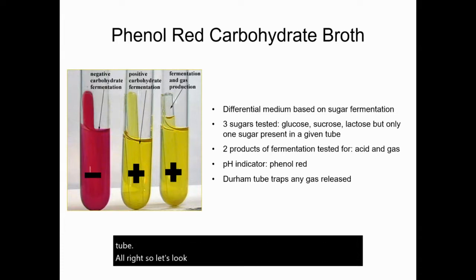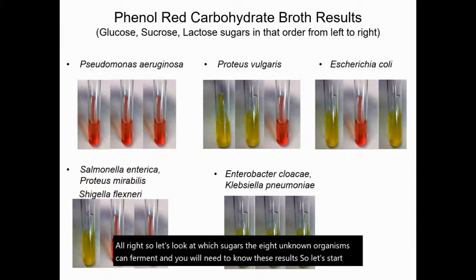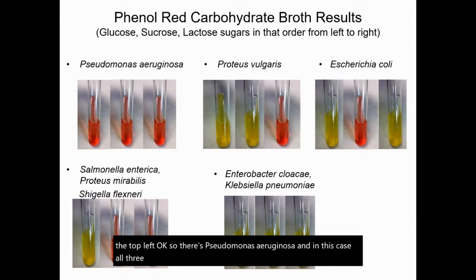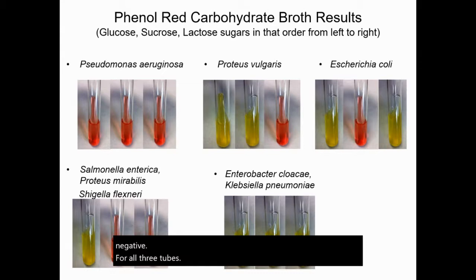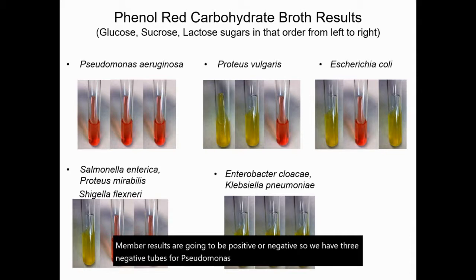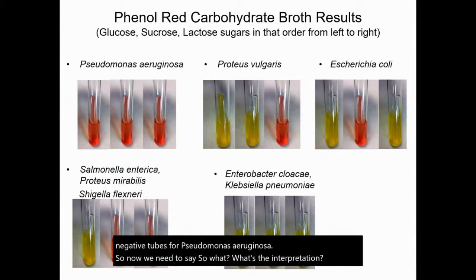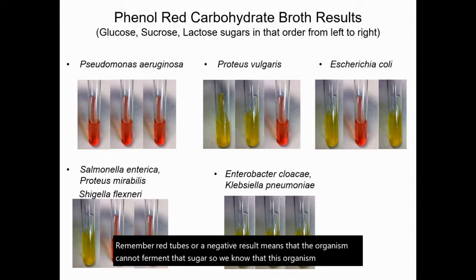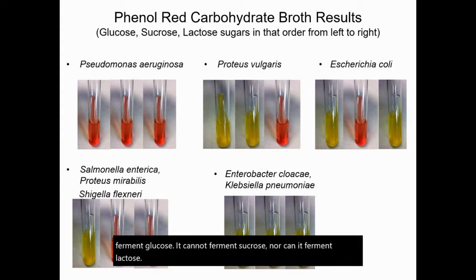Let's look at which sugars the eight unknown organisms can ferment — you will need to know these results. Starting with Pseudomonas aeruginosa: all three tubes are red. That means Pseudomonas aeruginosa is negative for all three tubes. Remember, results are going to be positive or negative. Red tubes or a negative result means that the organism cannot ferment that sugar. So we know that this organism cannot ferment glucose, it cannot ferment sucrose, nor can it ferment lactose. No fermentation for this organism.